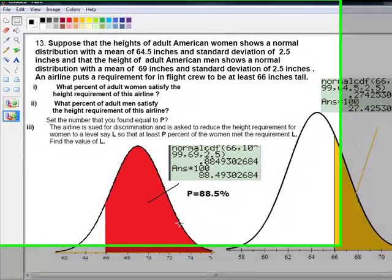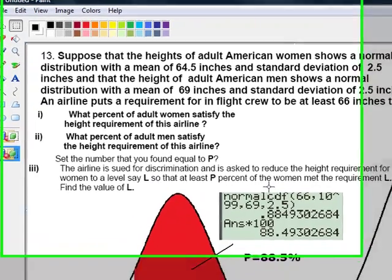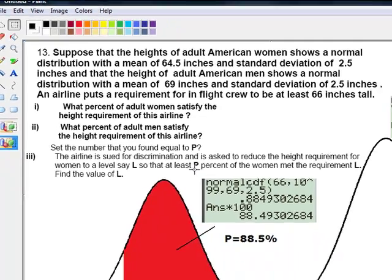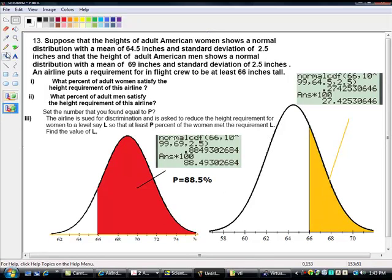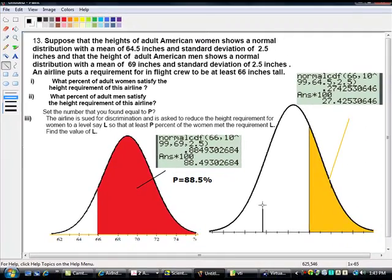Now they're saying suit for discrimination and to reduce the height requirements for the women to a level L, so that at least P percent of the women met the requirement L. That means, what we got to do is, we have to bring an L here. I don't know what that will be. So that this portion is now 88.5.